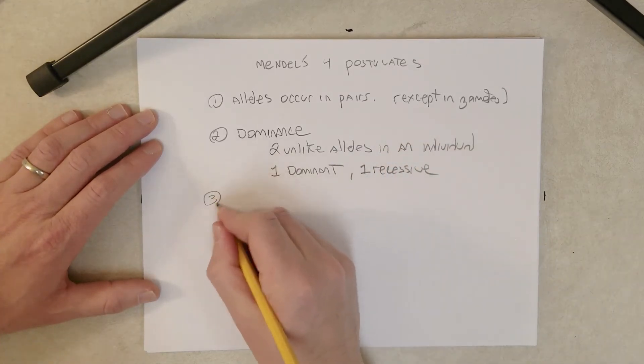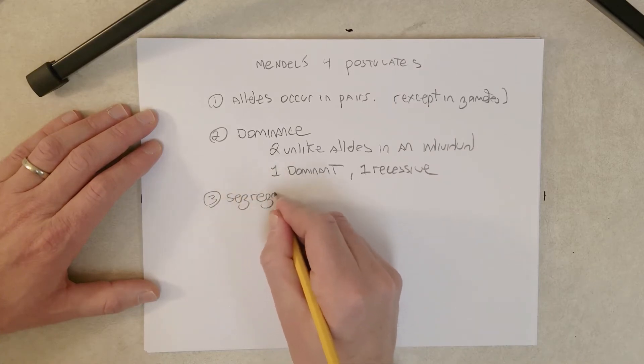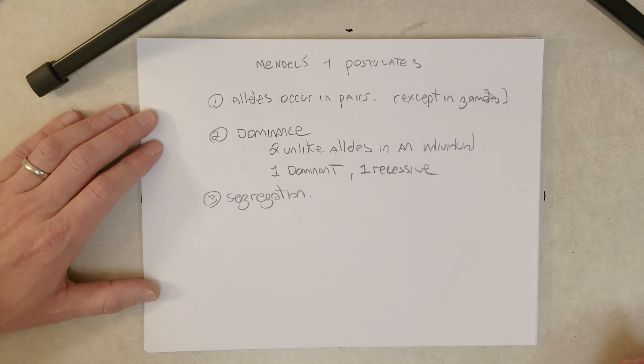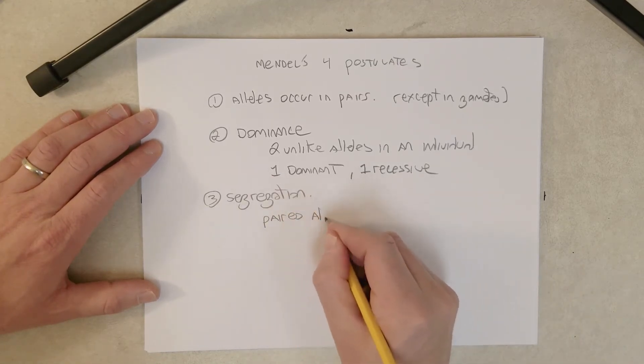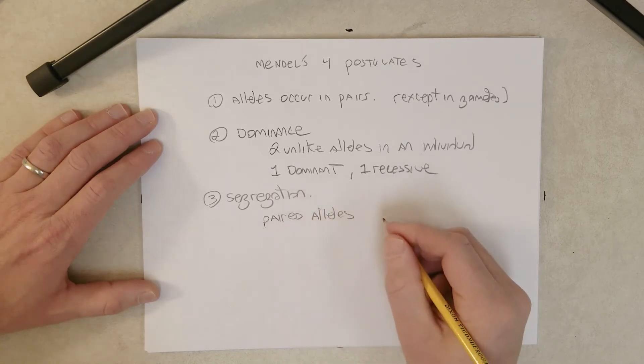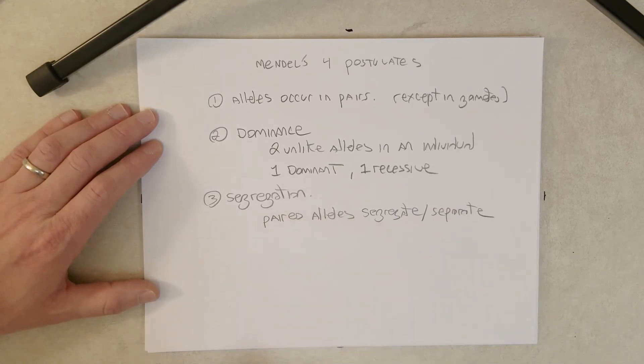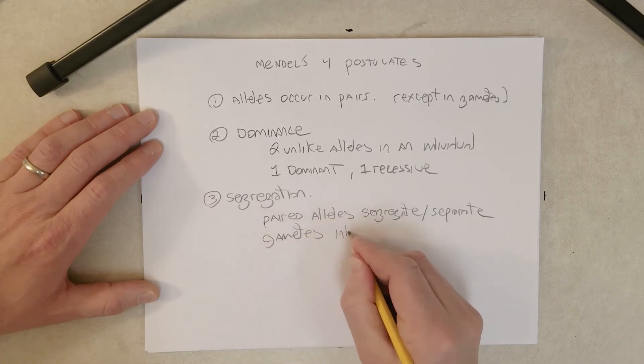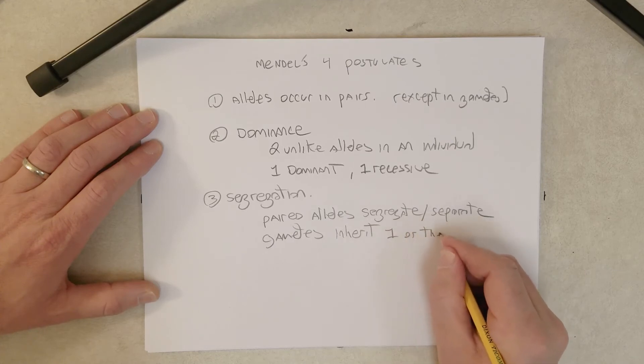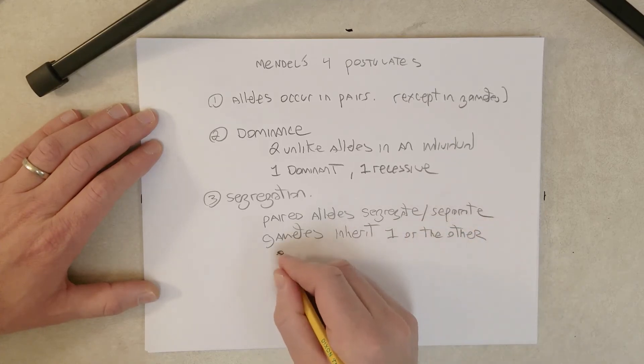The third postulate is on segregation. And what this says is that the paired alleles segregate or separate from each other during sexual reproduction. So gametes inherit one or the other with equal likelihood.